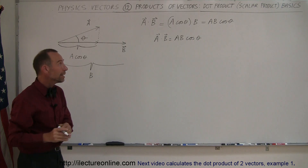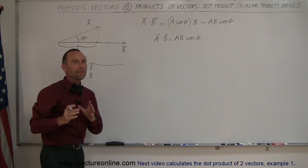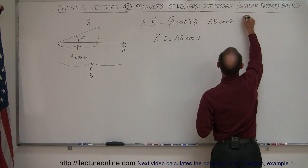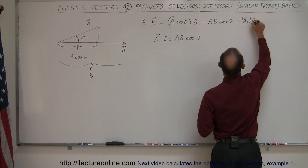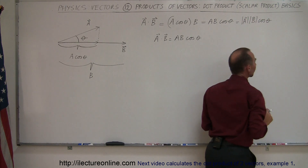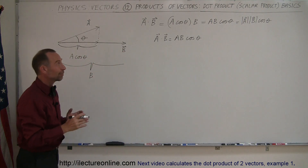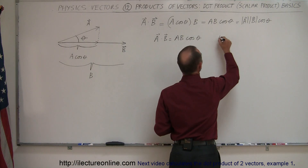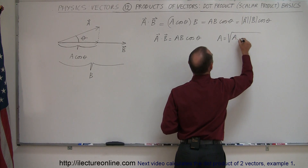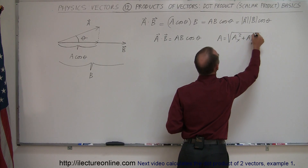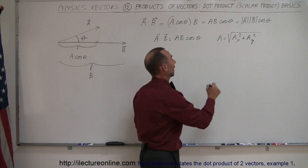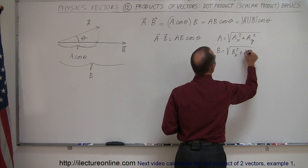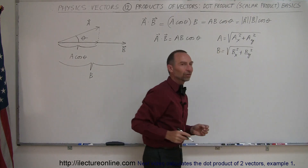Remember that A and B without the little lines on top means the magnitude of A and the magnitude of B. So we could write it as the magnitude of A times the magnitude of B times the cosine of theta. In two dimensions, the magnitude of A is the square root of the x-component of A squared plus the y-component of A squared, and similarly for B.